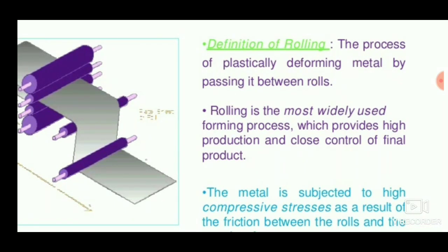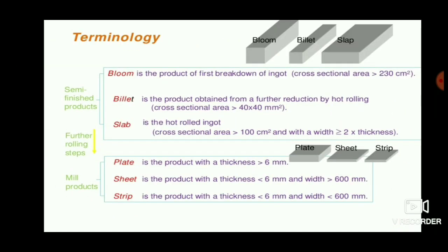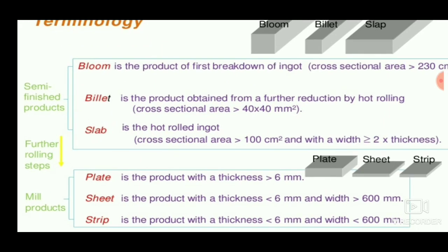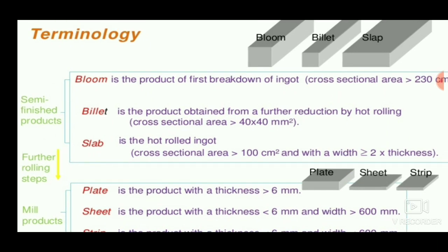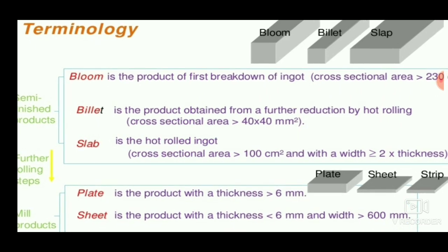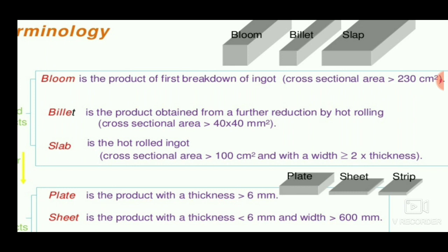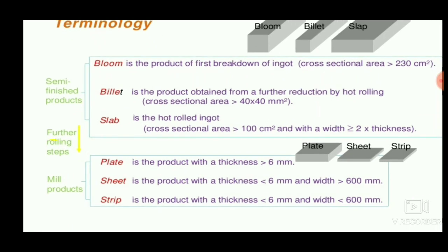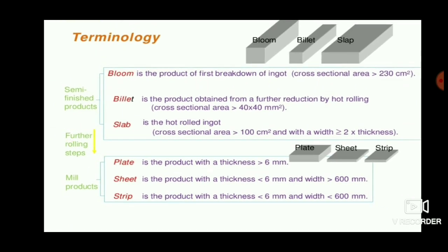Rolling is the most widely used forming process, which provides high production and close control of the final product. Sheets are formed using raw materials such as bloom, billet, and slab. Bloom is a product of the first breakdown of the ingot — the cast metal is turned into an ingot, which is broken down into a bloom of 230 cm square. A billet is a sub-product of bloom. A slab is a hot rolled ingot, and the final products include plates, sheets, and strips of various thicknesses.